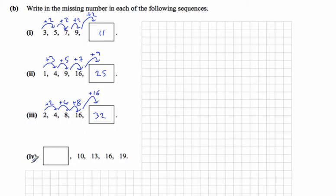Finally, in part four, we're looking for the first term of the sequence, so maybe we'll start at the end. To go from 19 to 16, we take away three, subtract three each time: 16 to 13, subtract 3; 13 to 10, subtract 3. So if we just continue that pattern, 10 take away 3 is 7, and we have our answer.